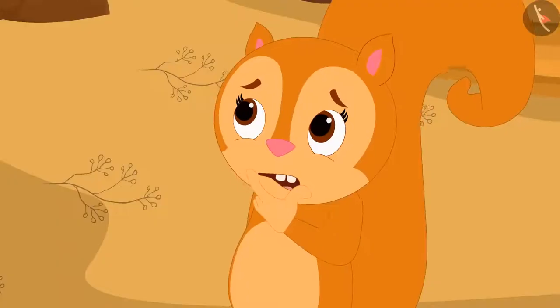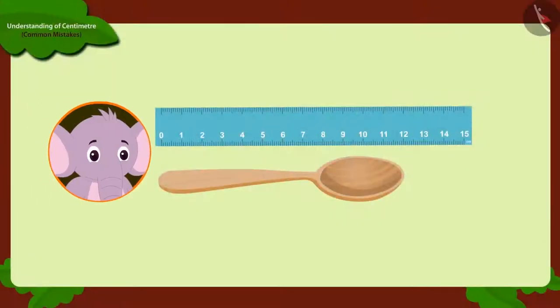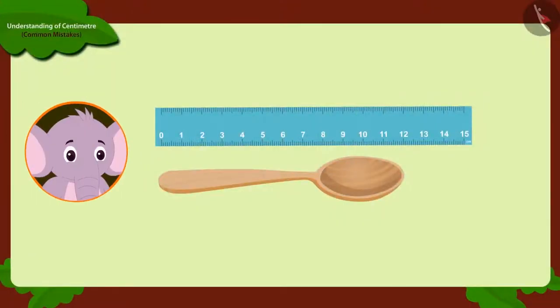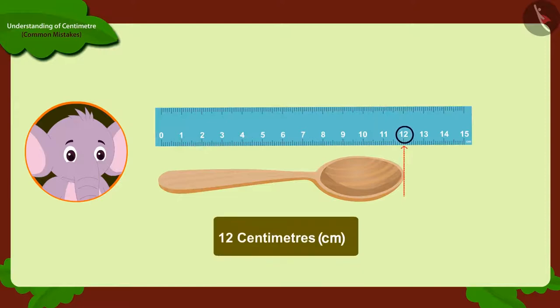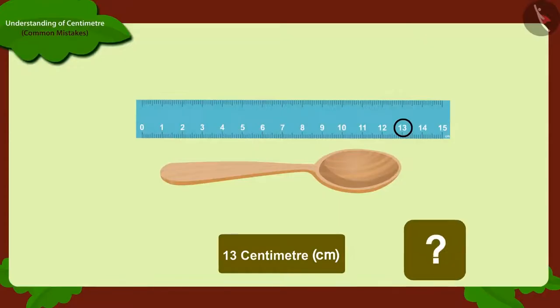Chanda started wondering how it happened. When Appu measured the length of that spoon, it was 12 centimeters. Then how did it become 13 centimeters today? Kids, can you tell what mistakes Chanda has made here?